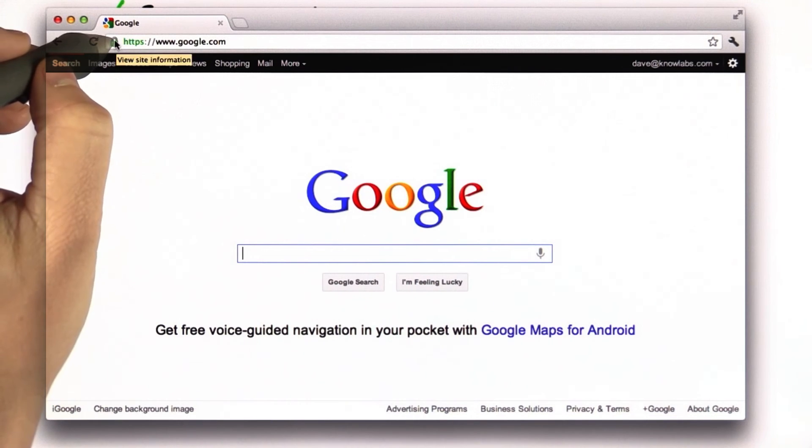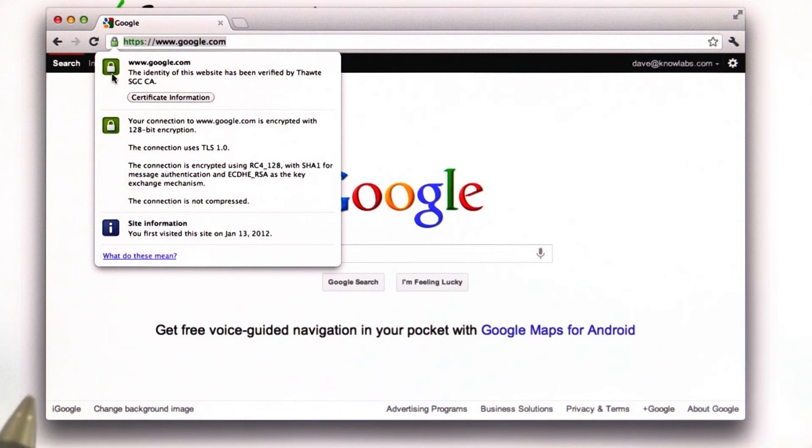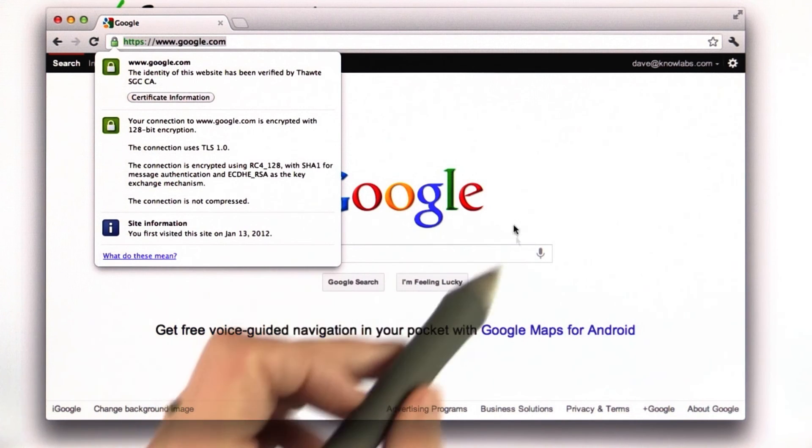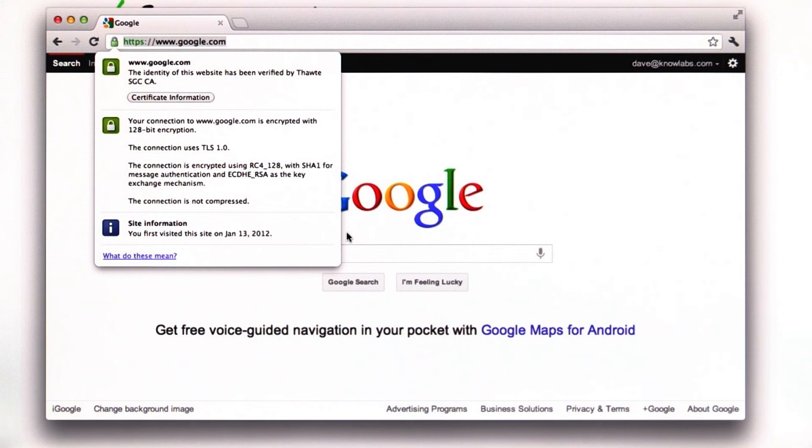This means it's using a protocol called TLS to encrypt all the traffic between you and Google. So both the keywords that you're typing are not exposed on the Internet as well as the search results. We'll talk more about that in a later unit in the class.